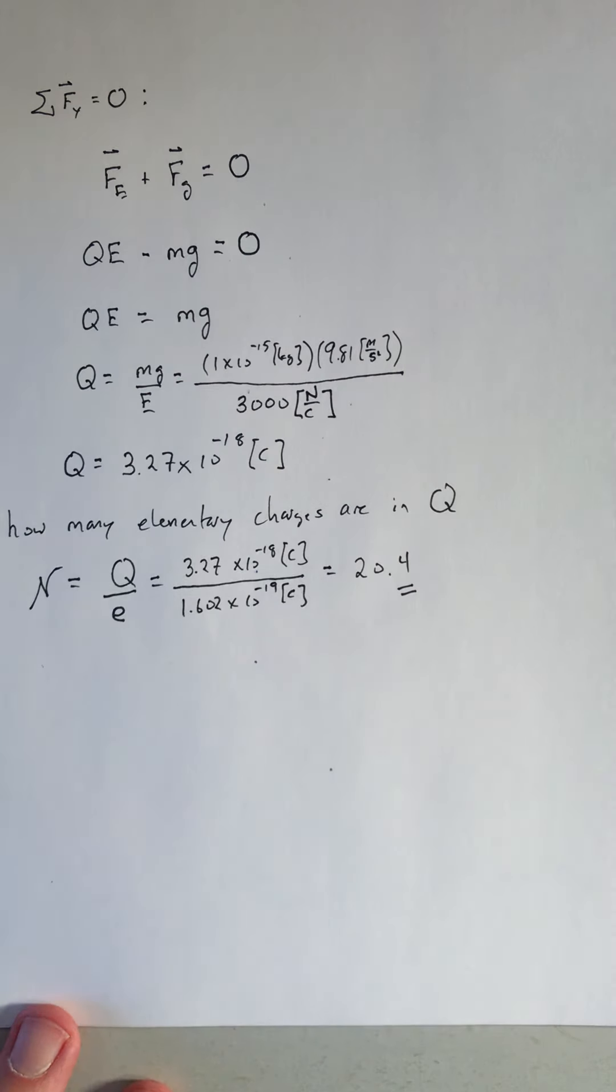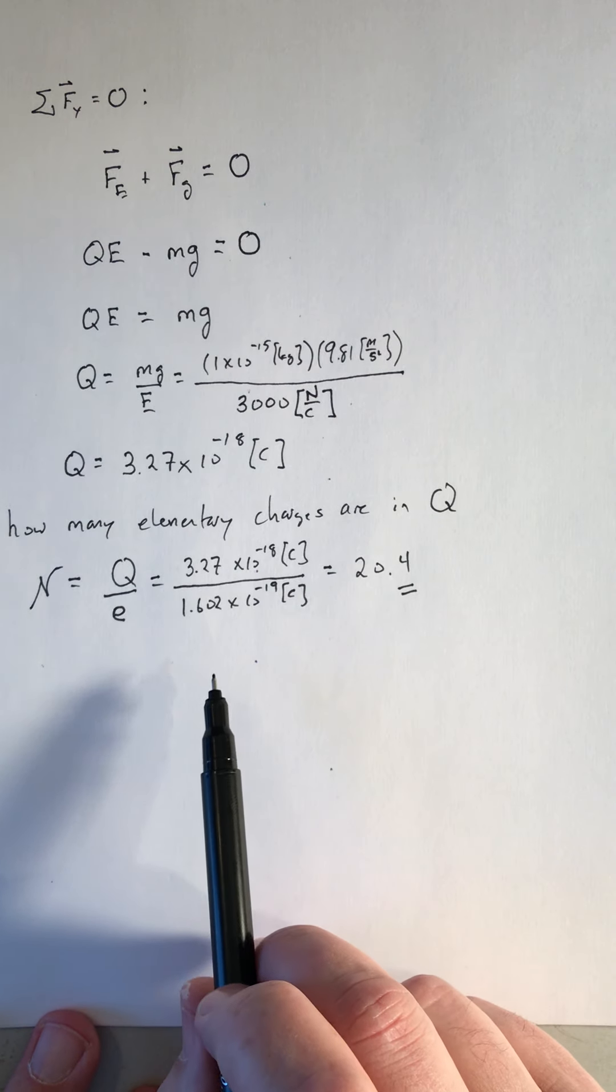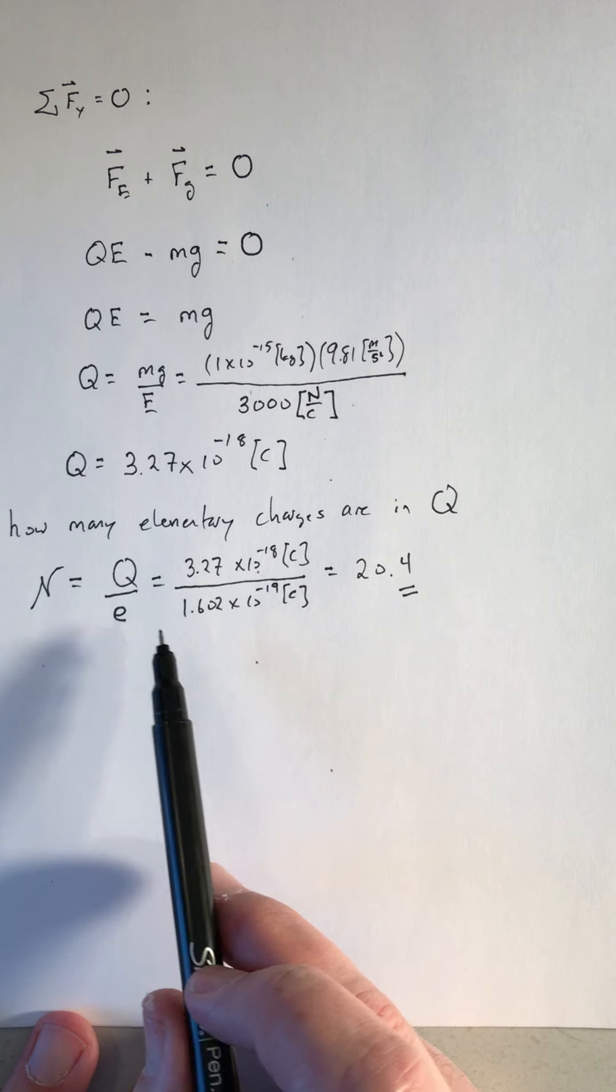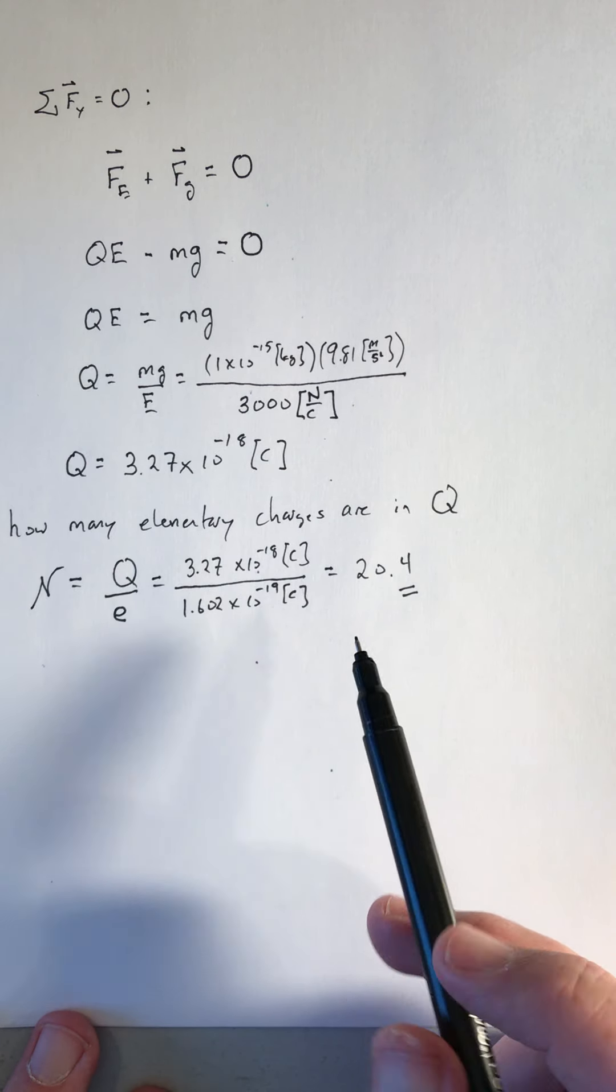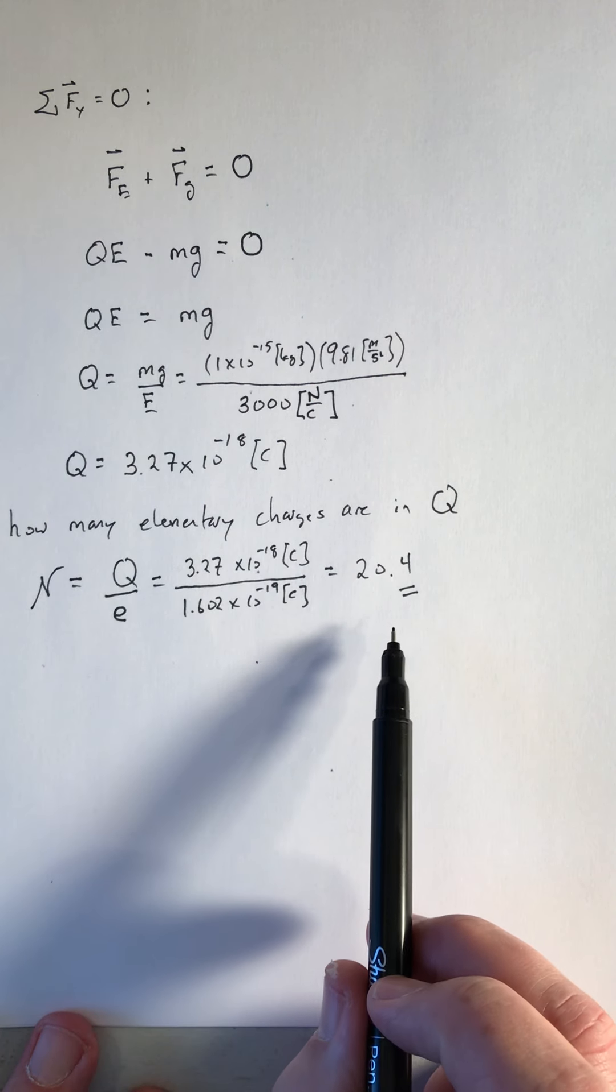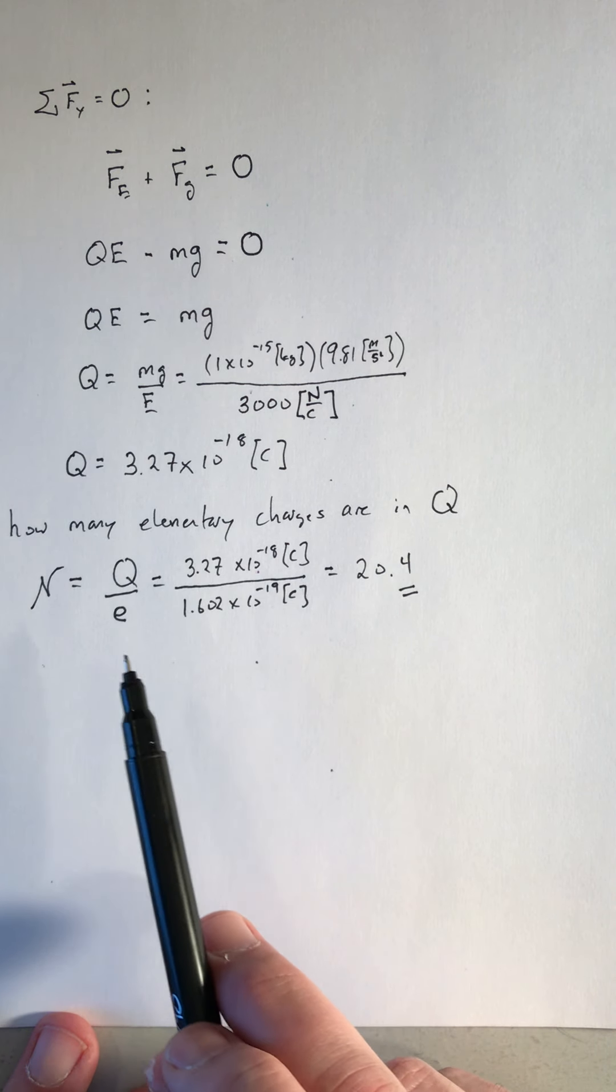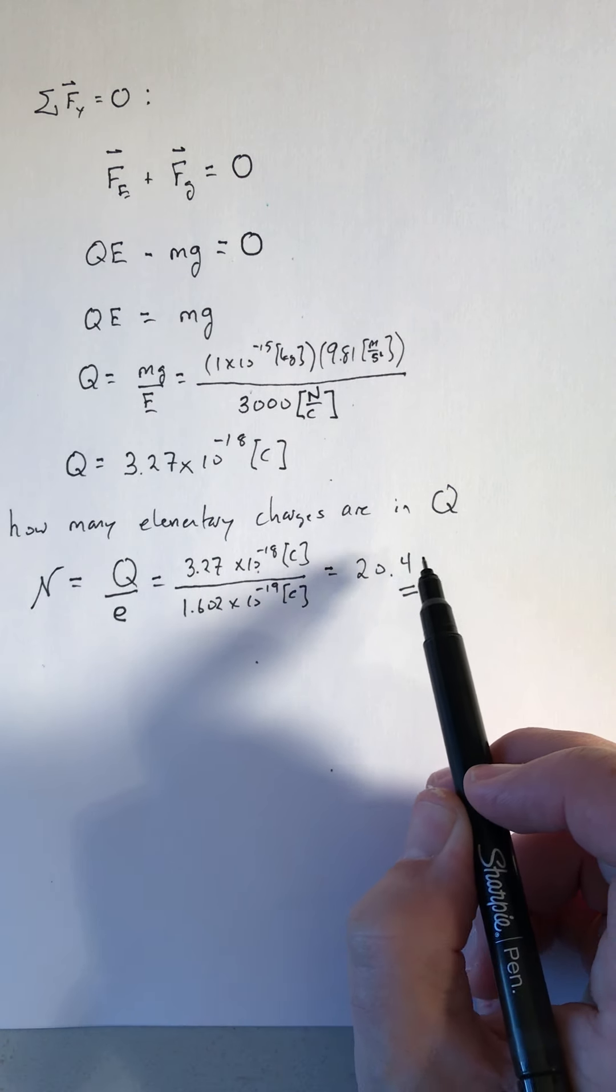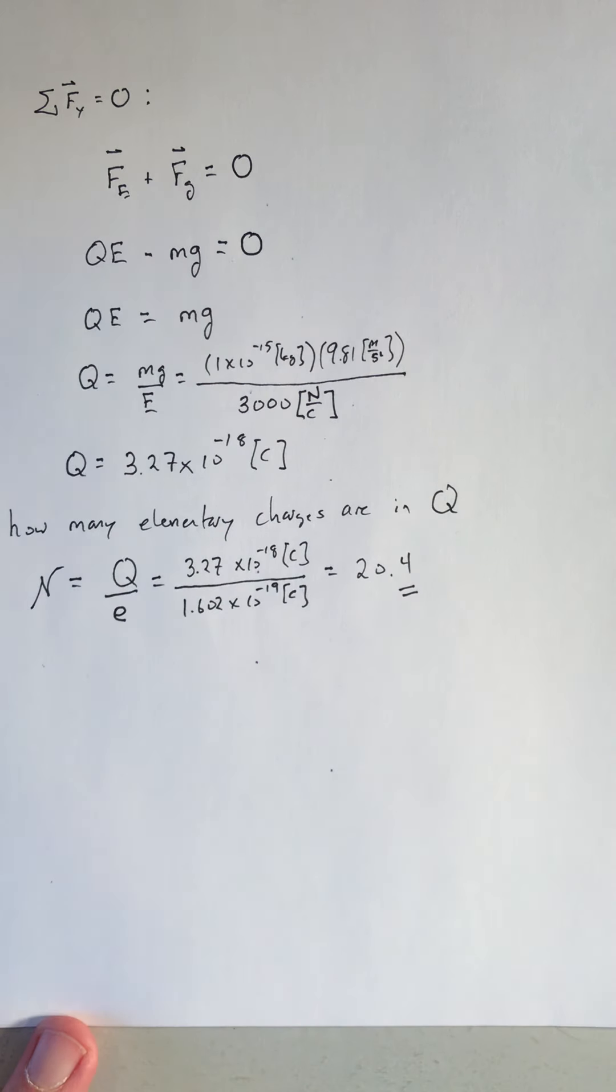And you get that to be 20.4. That 0.4 is a bit problematic. This would be an example of one of the data points that once you had sort of a trend in what the elementary charge is, this would be one of the data points that doesn't fit. So in Milliken's work, these would be sort of chucked out. I don't recommend doing that in lab, but this would be an example of a data point that had some systematic error in it that was giving you a fraction of an elementary charge. It's not possible.